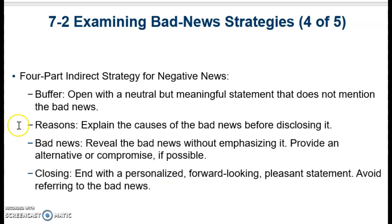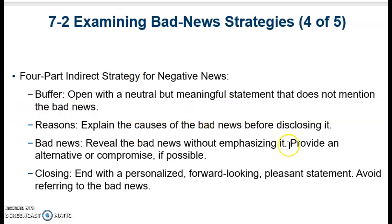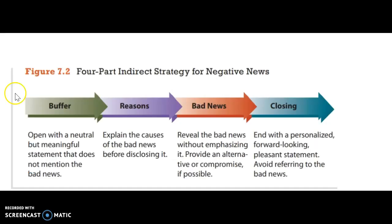There is a four-part indirect strategy for negative news. First, you're going to have a buffer — open with a meaningful statement without mentioning the bad news. Then explain the causes of the bad news before disclosing it. Then reveal the bad news. And finally, close with a pleasant statement. Model figure 7.2 provides an illustration of this four-part indirect strategy for negative news.